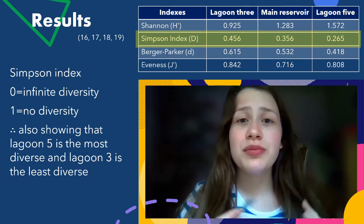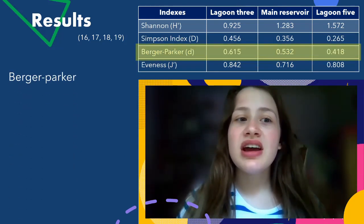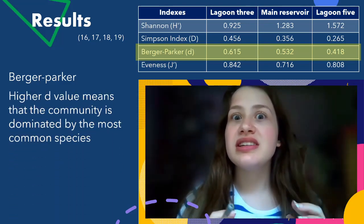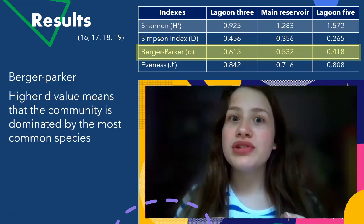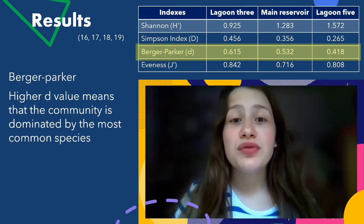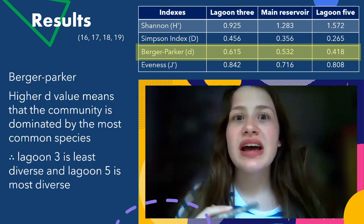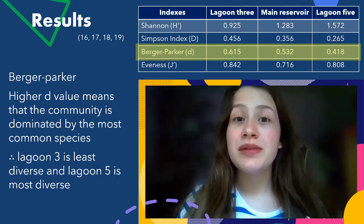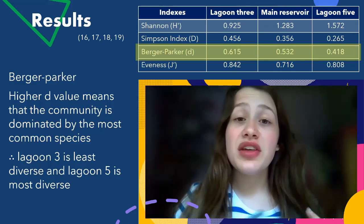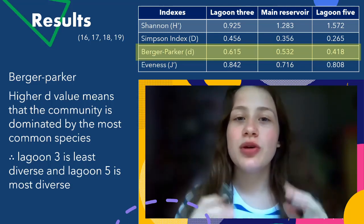With the Berger-Parker Index, a greater value of D means the community is dominated more by the most common species. Lagoon 3 has the greatest value, meaning it is probably the least diverse, as it is more dominated by the most common species — in this case Falleni — than the other two, which also have Falleni but where it is not as dominating.